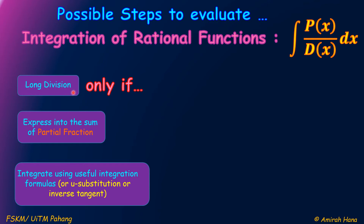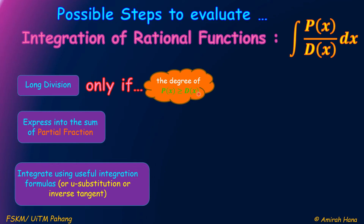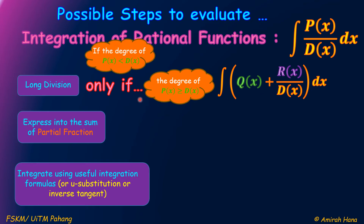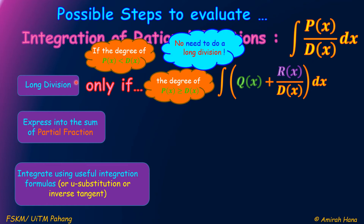Now we look at long division. We only use the long division method if the degree of the numerator is greater than or equal to the degree of the denominator. After we do a long division, we need to express P(x) over D(x) into the form of Q(x) plus R(x) over D(x), where Q(x) is the quotient and R(x) is the remainder after long division.